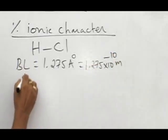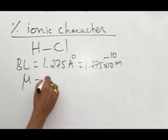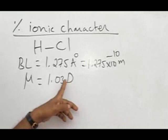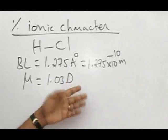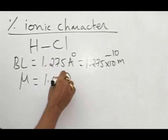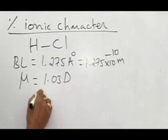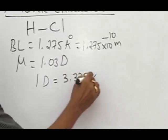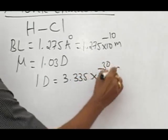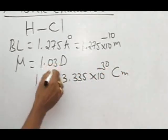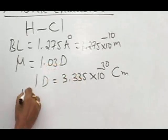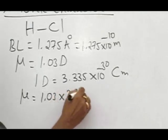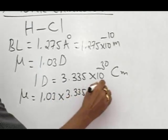Now, the other data is the dipole moment. Dipole moment is 1.03 Debye unit. This is the old unit. With the Debye unit, we cannot solve the problem, so we have to convert that into SI unit. We know that 1 Debye unit is equal to 3.335 × 10^-30 coulomb meter. Therefore, mu is equal to 1.03 × 3.335 × 10^-30.